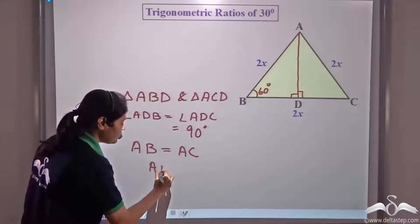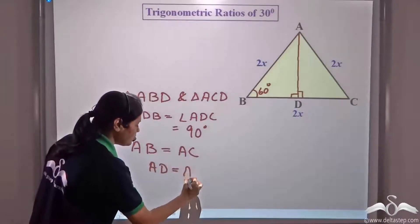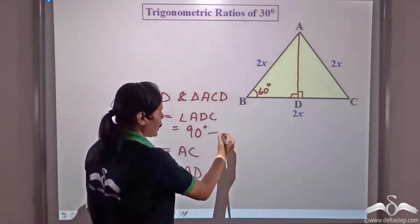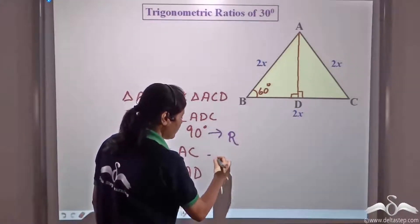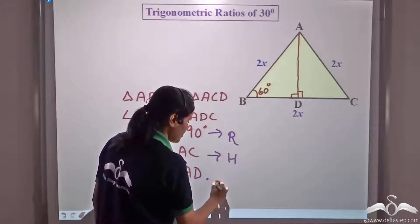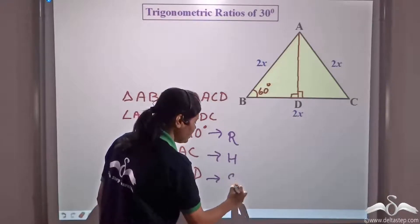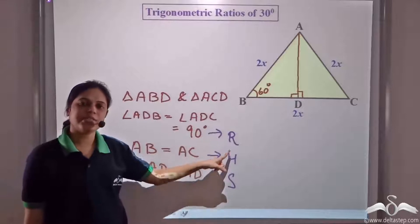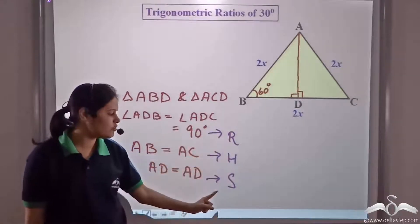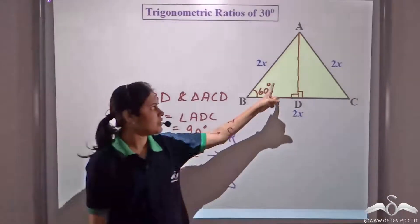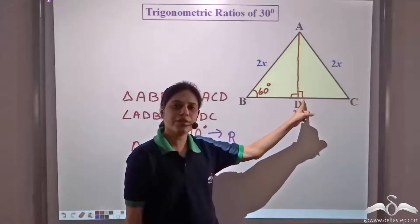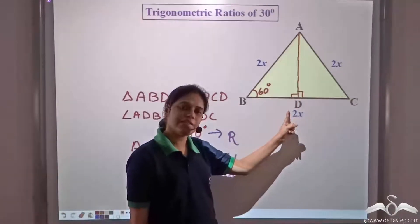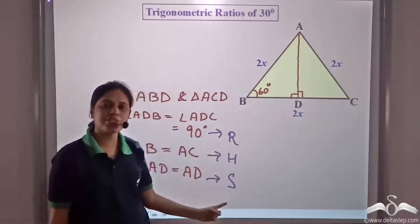We have AD equal to AD. So we have a right angle, a hypotenuse, and a common side. By RHS — that is right angle, hypotenuse, side congruency — triangle ABD and triangle ACD are congruent by RHS axiom.